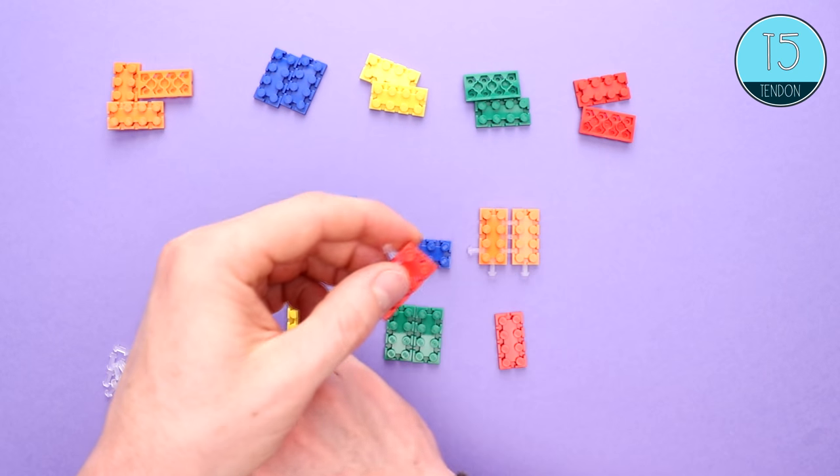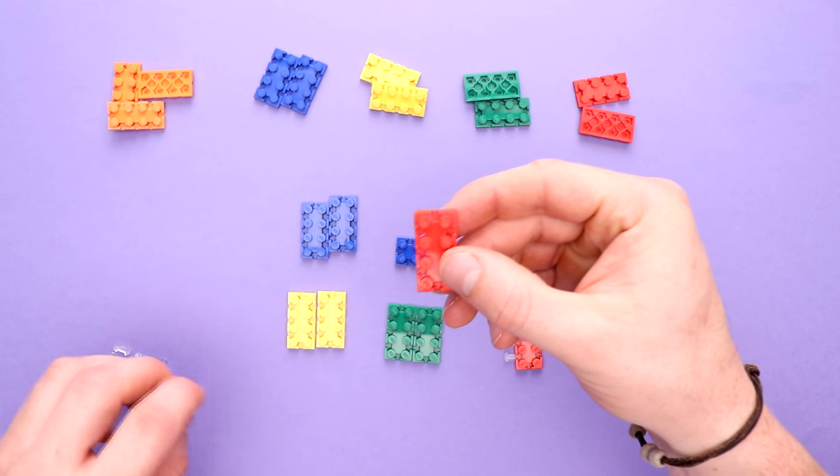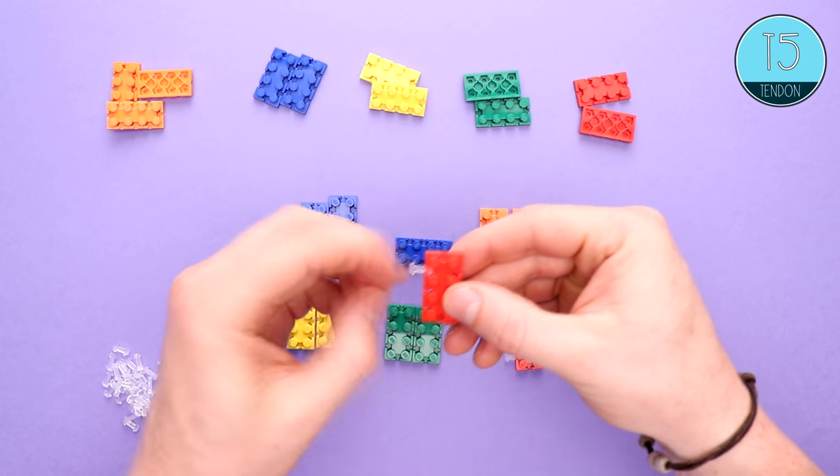So, as we go along, you can see I'm placing the T5 tendons into the bricks. I'm doing it in a particular pattern that's going to help me when I try to push them all together to create one side of the handbag.